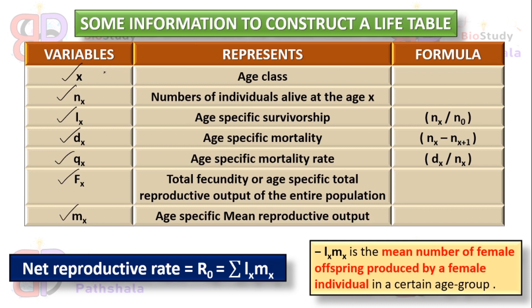x stands for age class or age class group. nx is the number of individuals alive at age group x. lx is the age-specific survivorship — how many individuals survive at age group x — calculated as nx divided by n₀. dx is the age-specific mortality, meaning how many individuals are dying from age group x to x+1, calculated as nx minus nx+1.